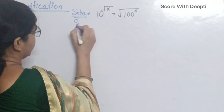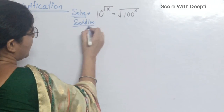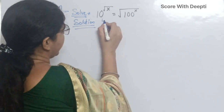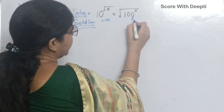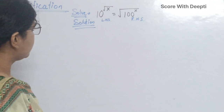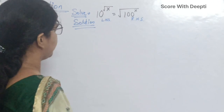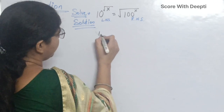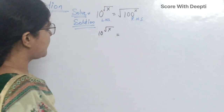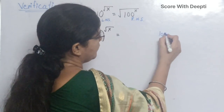Start solution. In this problem, there are two sides: left hand side and right hand side. First, we focus on the right hand side and write the left hand side as it is. In the right hand side, in place of 100, we can write 10 squared.